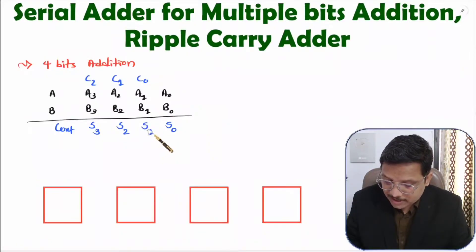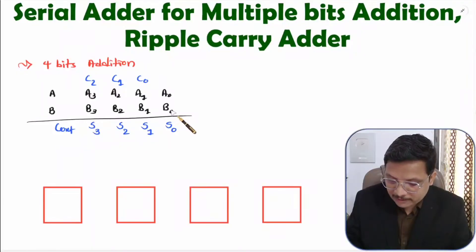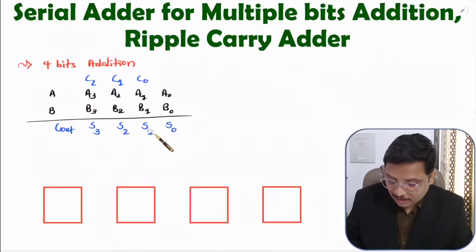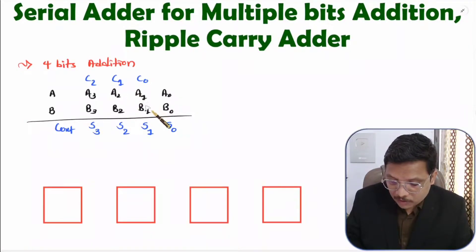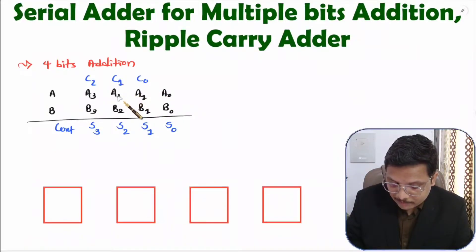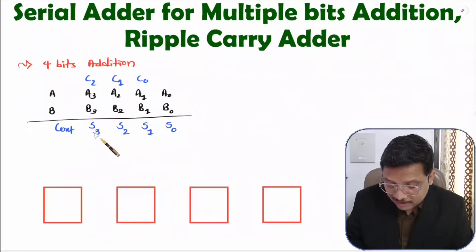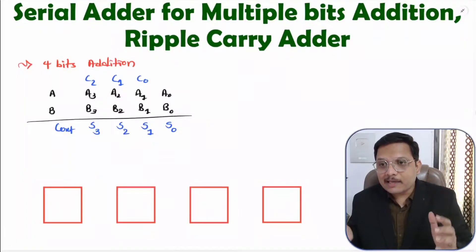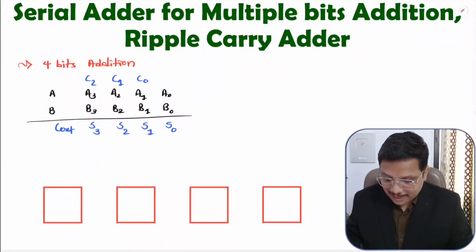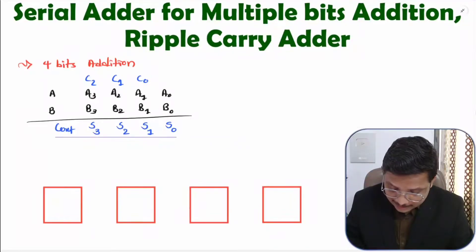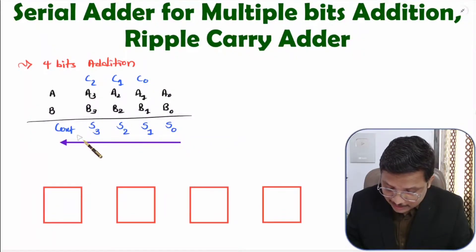S1 cannot be generated without C0 — first you have to add A0 and B0, which generates carry C0. After having that carry, you can have S1. S2 cannot be there until you have carry C1 — so first you add A0 and B0 to get C0, then add A1, B1, and C0 to get C1. Once you have C1, you can have S2. But S3 cannot be there until you have carry C2. So we are serially adding data — addition is happening in this direction serially.